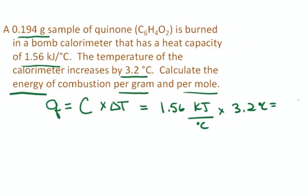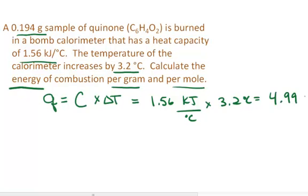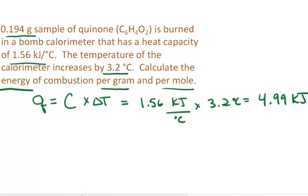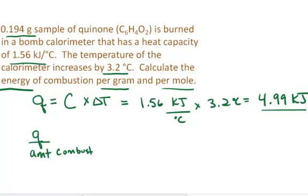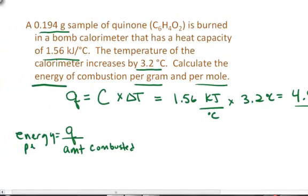The amount of heat liberated is 4.99 kJ. This heat was liberated per the amount of sample that was burned. So if I want to report the energy of combustion per gram, all I need to do is take the heat that was liberated — 4.99 kJ — and divide it by the amount that was combusted. This will give me the energy per gram, which also equals the change in internal energy.